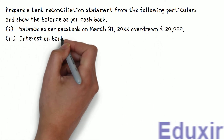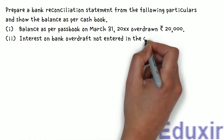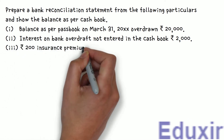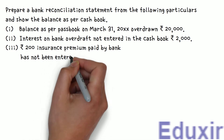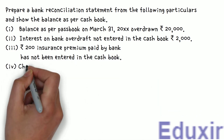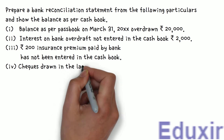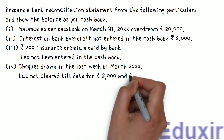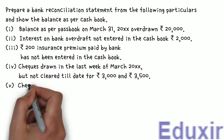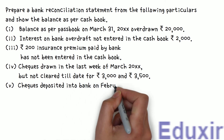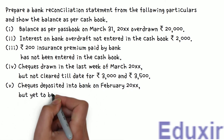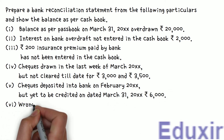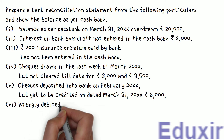2. Interest on bank overdraft not entered in the cashbook ₹2,000. 3. ₹200 insurance premium paid by bank has not been entered in the cashbook. 4. Checks drawn in the last week of March 2017, but not cleared till date for ₹3,000 and ₹3,500. 5. Checks deposited into bank in February 2017, but yet to be credited as of March 31st, 2017, ₹6,000. 6. Wrongly debited by bank ₹500.